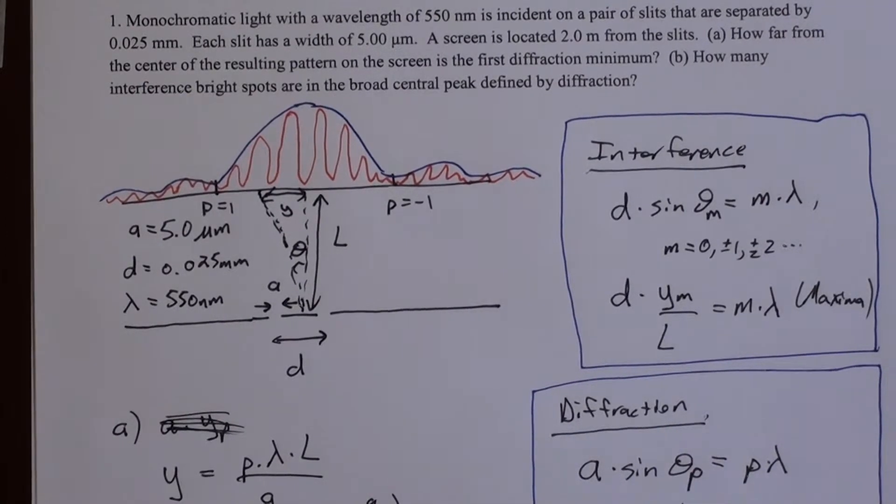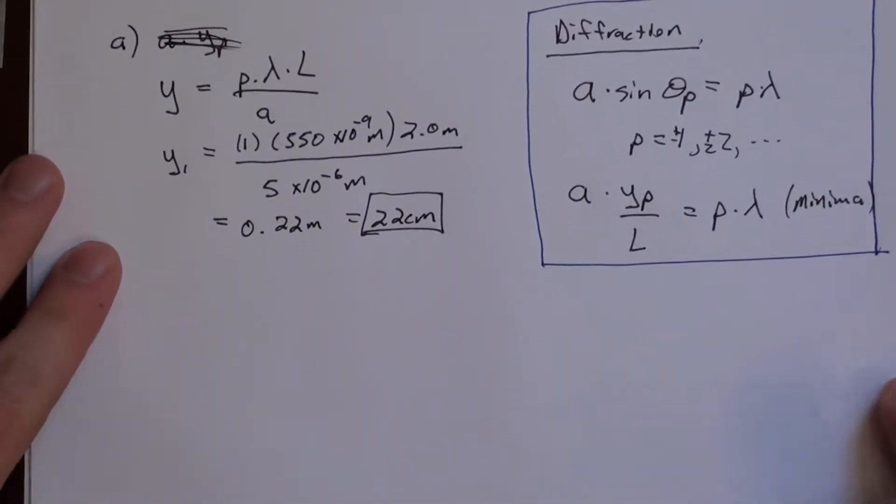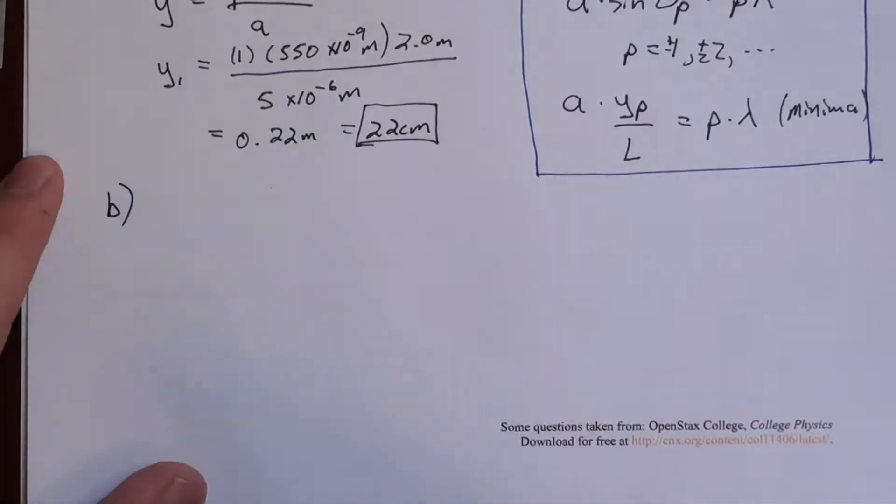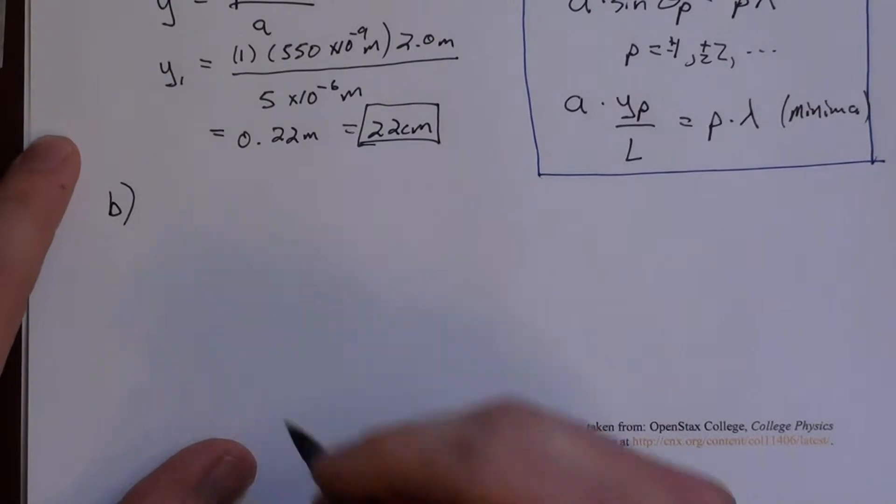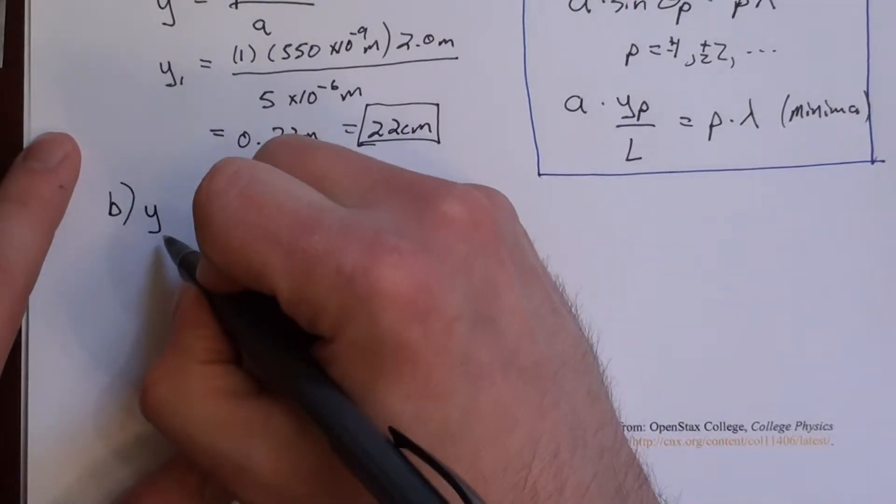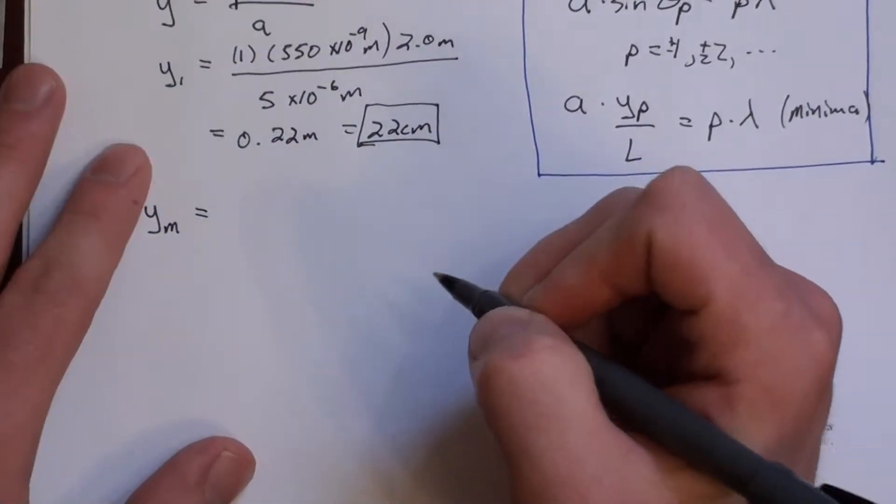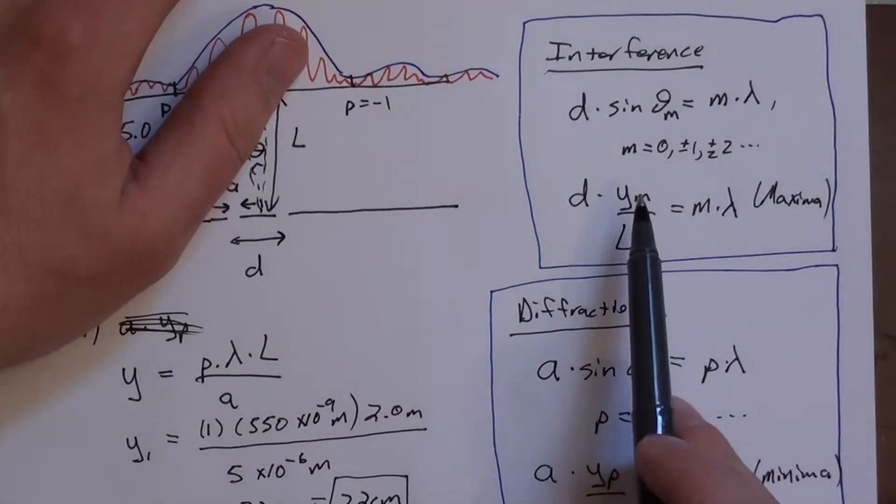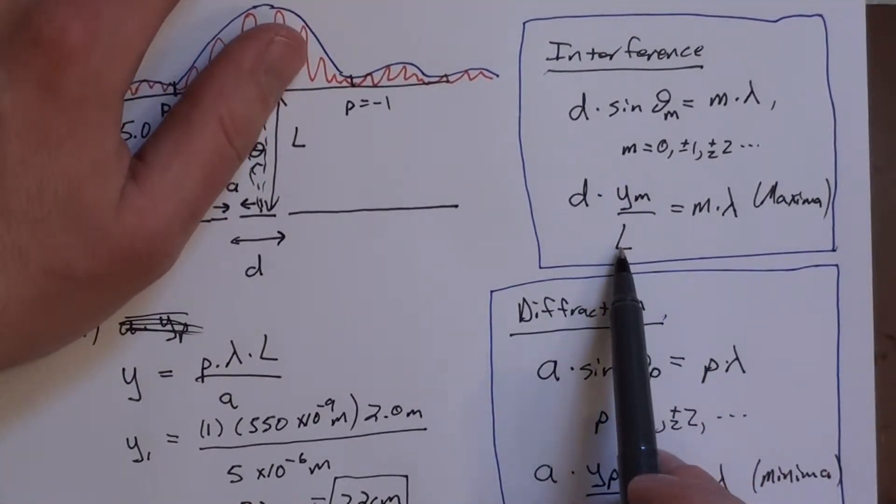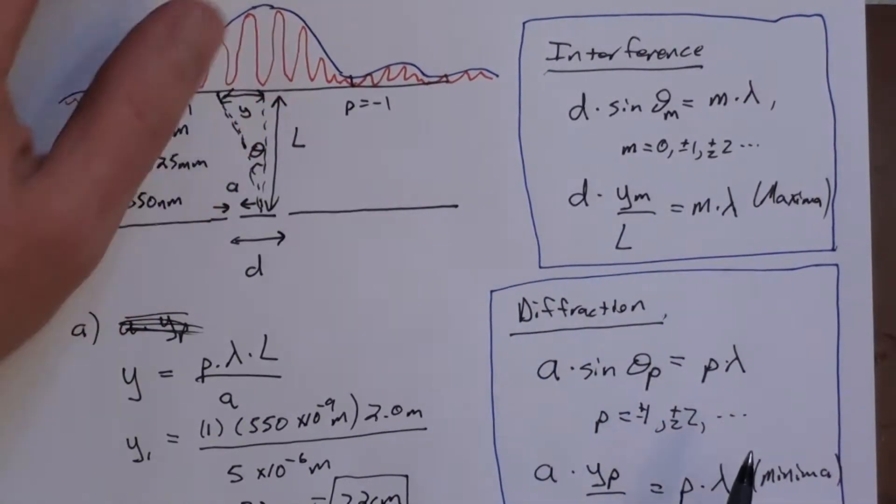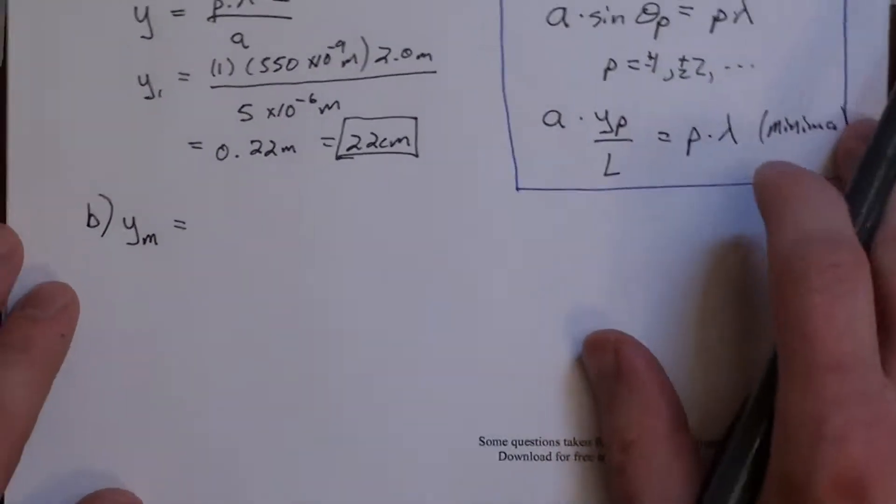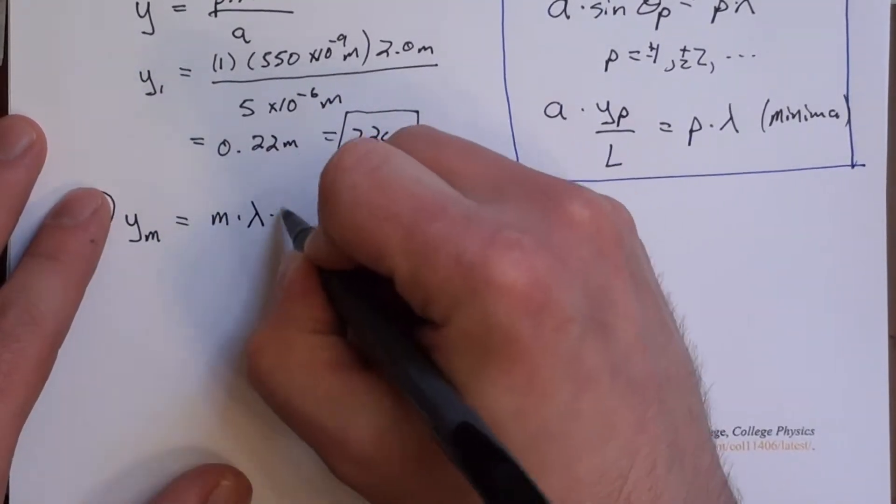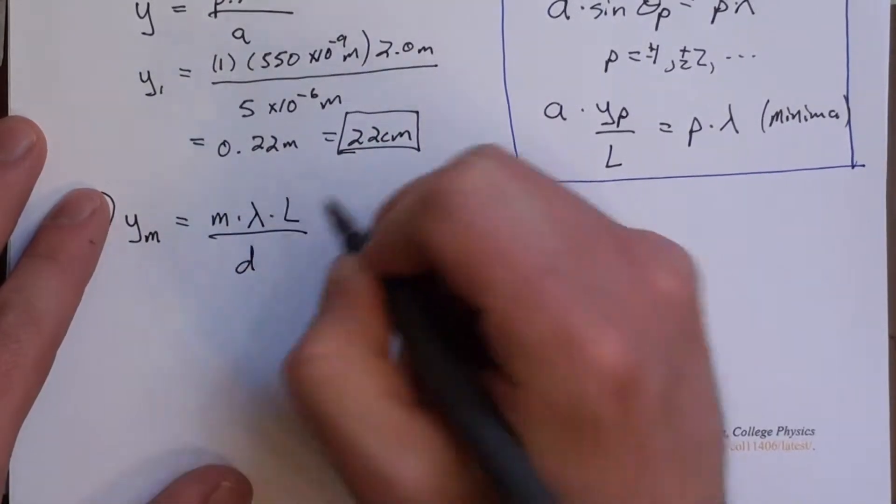So again, we're going to be looking at interference. I'm going to do the same trick. I'm going to solve for y sub m this time. So I'm going to multiply by L and divide by D, and I get M times lambda times L over D.